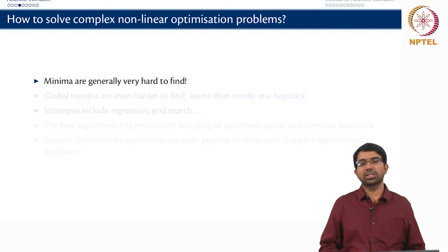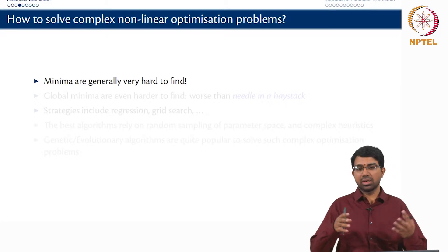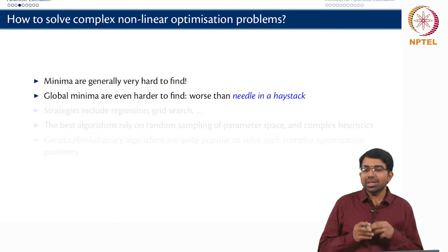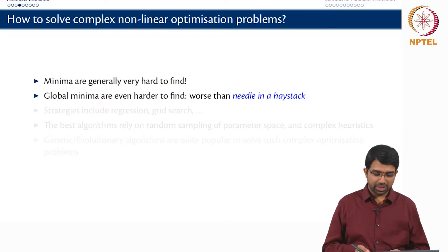How do you solve such complex non-linear optimization problems? The minima are generally very hard to find because it is in a very complex space. Forget finding global minima, it is worse than a needle in a haystack.